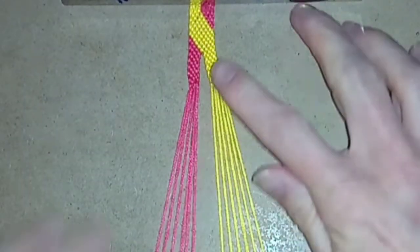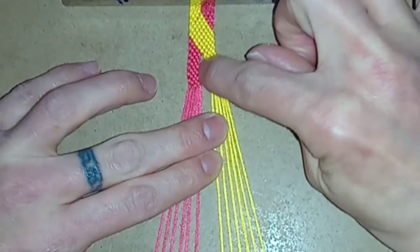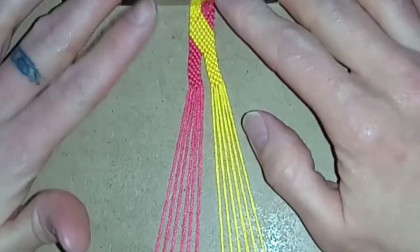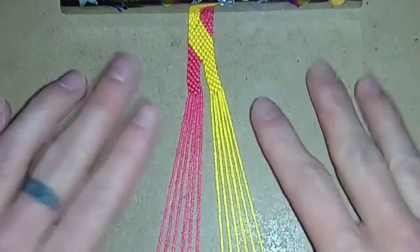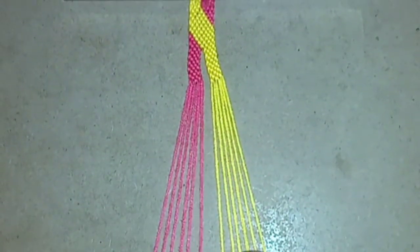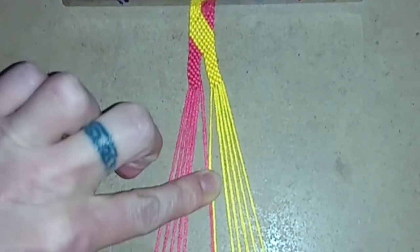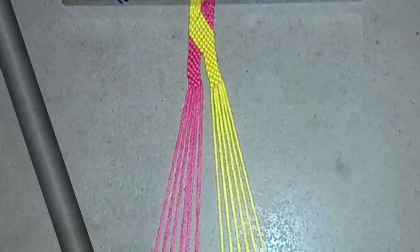Once you've done as many rows as you want for your single colours you'll notice you've got a little gap there. Now you want to rejoin. For me I'm rejoining on row 12 and you can rejoin on whichever row you want but bear in mind it will have to be an even numbered row because that's the row where you do your threads in the center together and that's where you'll rejoin.